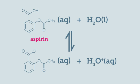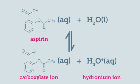Aspirin is a weak acid, so only partially dissociates in water to form an equilibrium mixture with the carboxylate and hydronium ions. This is represented by the equilibrium arrow on the chemical equation.